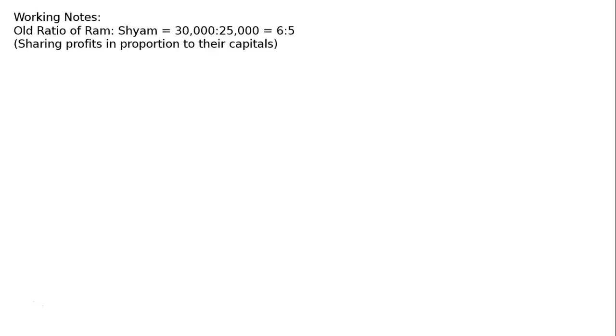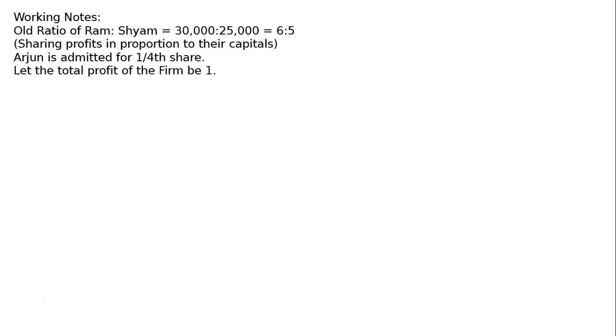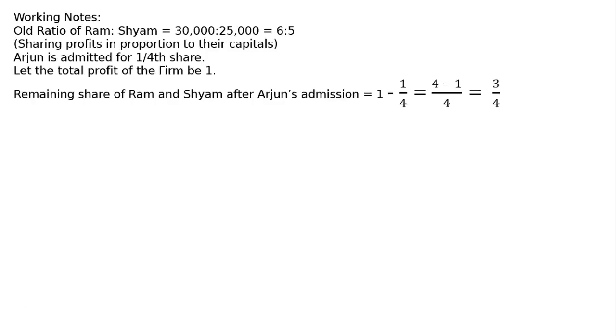Working notes: Old ratio of Ram to Siam is equal to 30,000 to 25,000, that is 6 to 5. Arjun is admitted for one-fourth share. Let the total profit of the firm be 1. The remaining share of Ram and Siam after Arjun's admission is equal to 1 minus 1/4, which by LCM of 4 gives 4 minus 1 = 3/4.